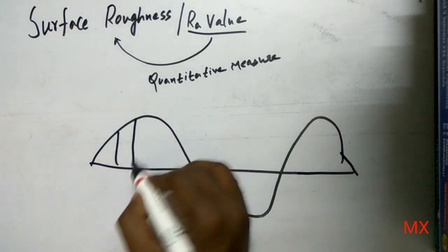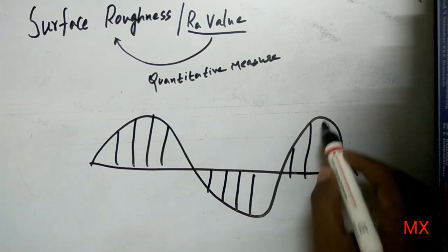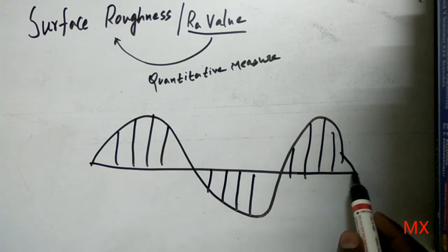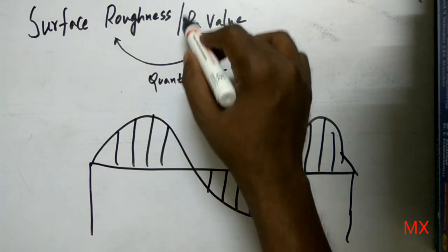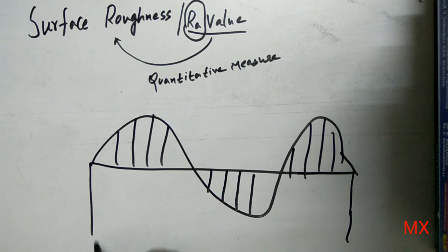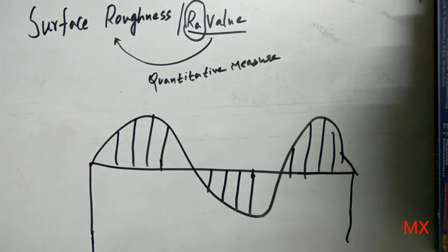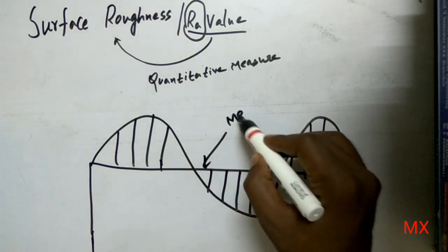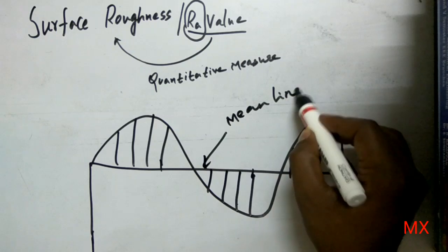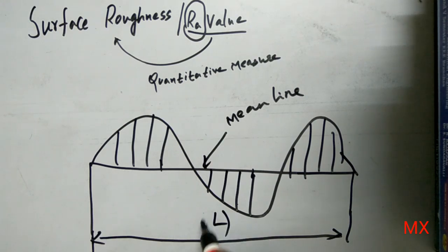These are the deviations in this surface — I will be explaining this completely. For any surface you are considering, for measurement of any Ra value, you should take a surface like this. There should be deviations in the surface, and this is termed to be the mean line. This entire length is said to be the sampling length L.